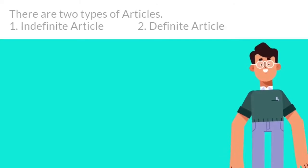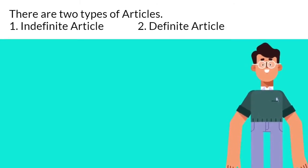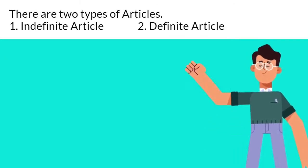There are two types of articles. First one, indefinite article. And the second, definite article.